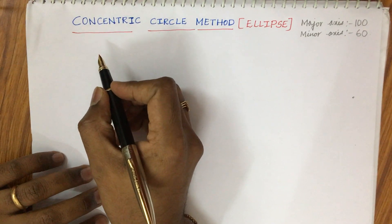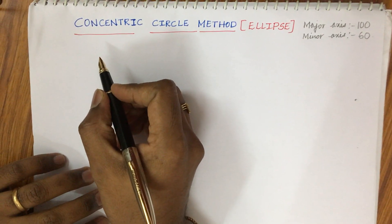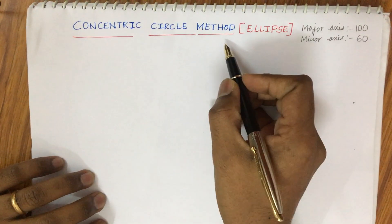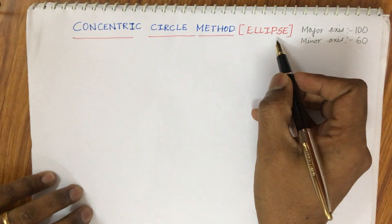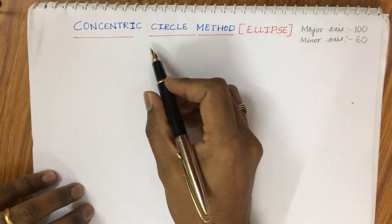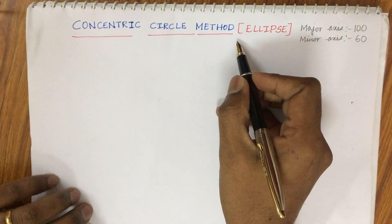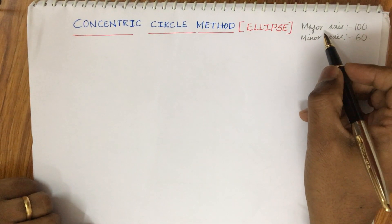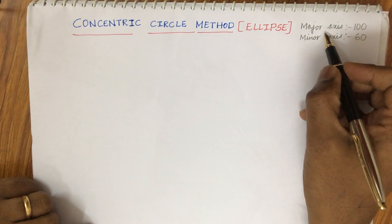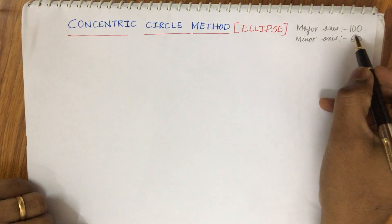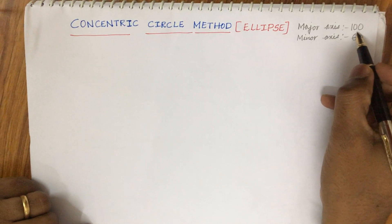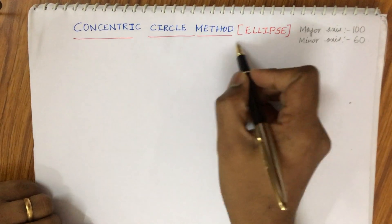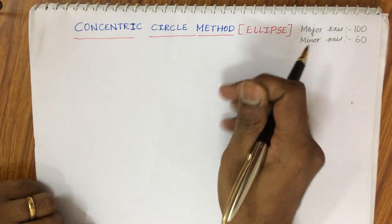Welcome back students. In today's video, I am going to explain the concentric circle method construction of ellipse. If a concentric circle method is given, the question will be like: draw an ellipse using a major axis and minor axis of dimensions 100 and 60 using the concentric circle method.